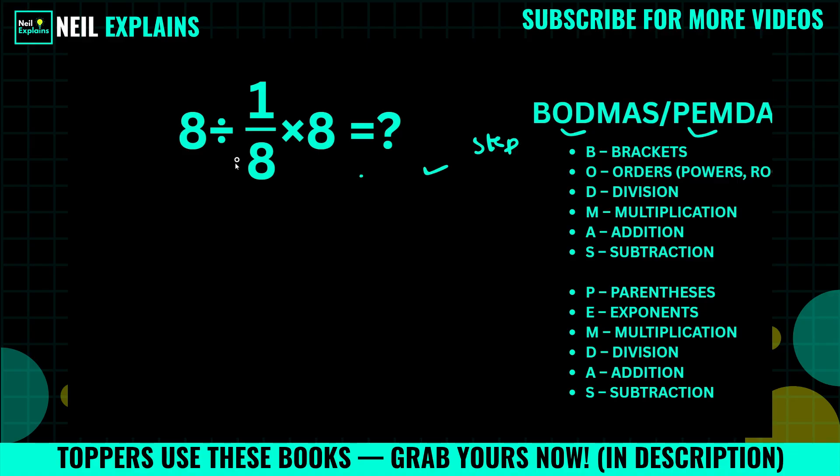If you think like 8 divided by 8 and it becomes 1, then times 2, that's not going to be correct. We will solve it properly. We will consider division